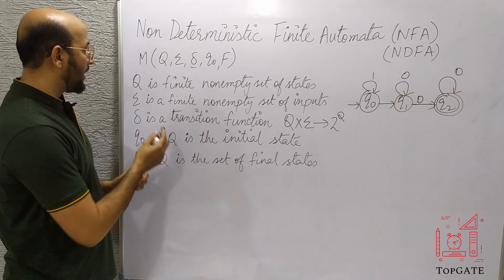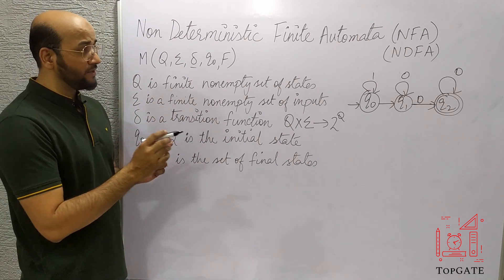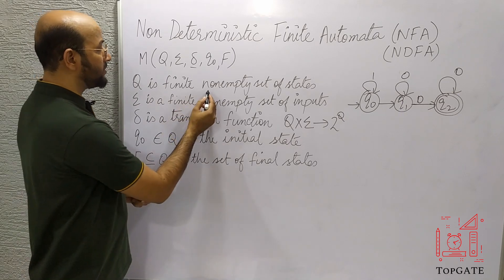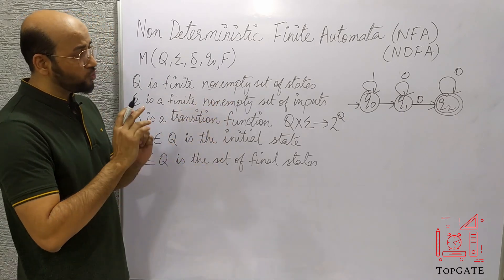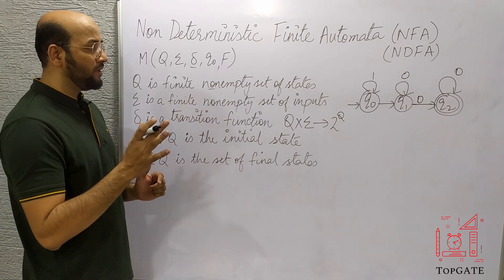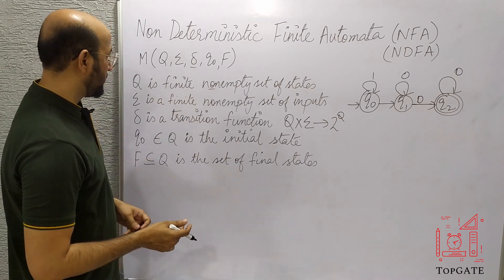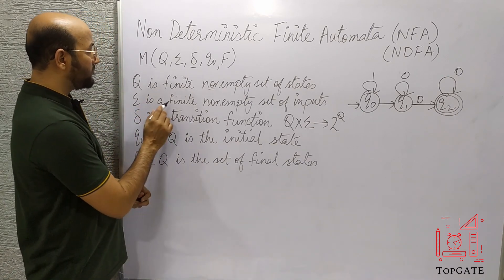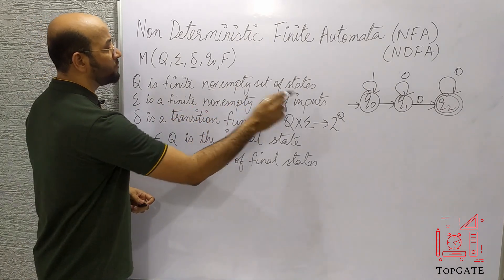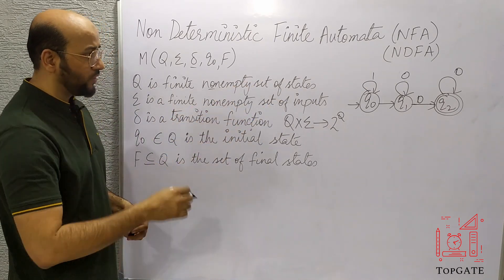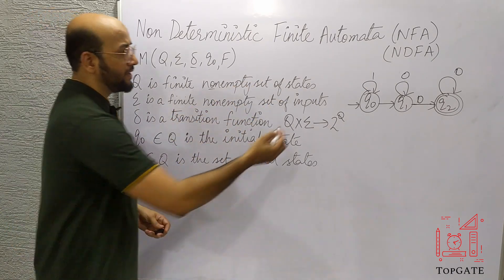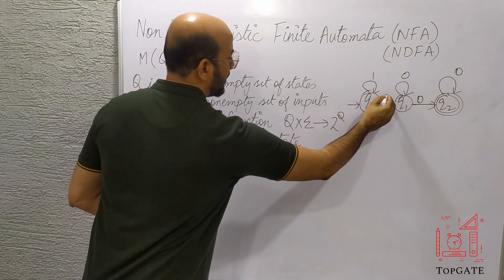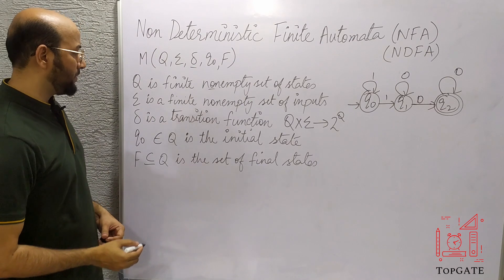It is finite, meaning a finite number of states should be there, and it should be non-empty — there should be at least one state. Next, sigma is a finite non-empty set of input alphabets. Whatever input alphabets we are taking, like 0 and 1, those are the input alphabets.